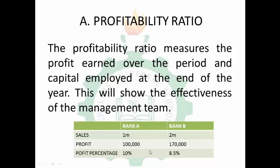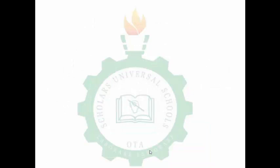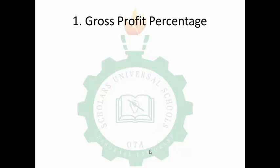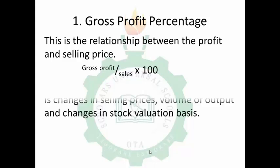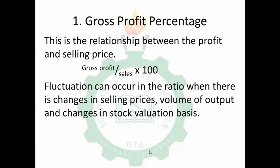In this class we will consider several profitability ratios to assess profit earned over the period and capital employed. First, we talk about gross profit percentage. Gross profit is sales minus cost of sales. Gross profit percentage is calculated as gross profit over selling price times 100%. It checks the relationship between profit and selling price.